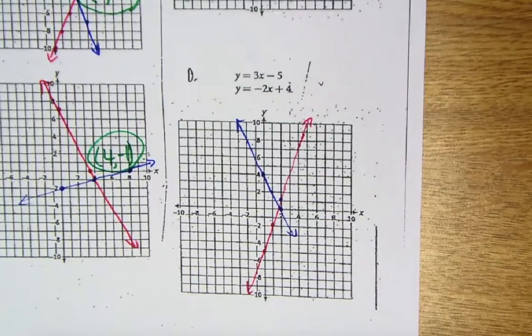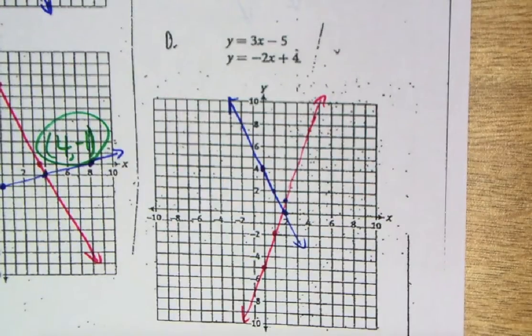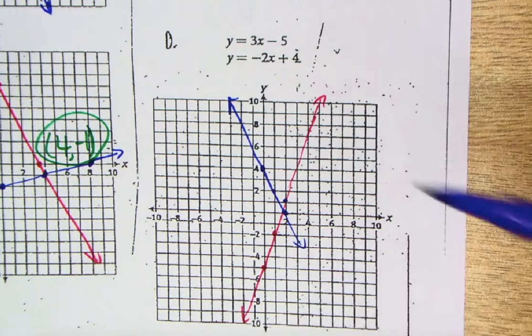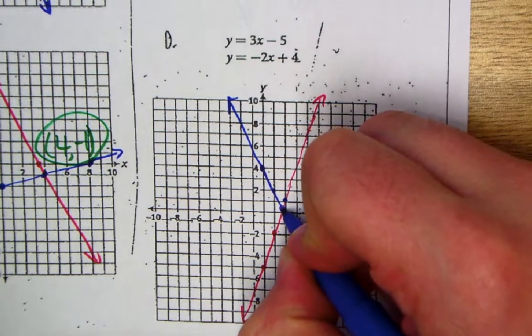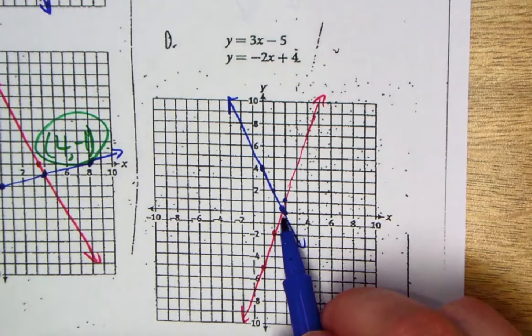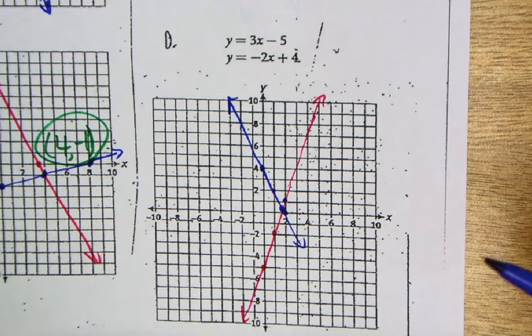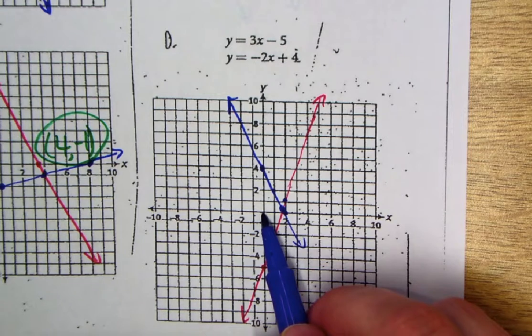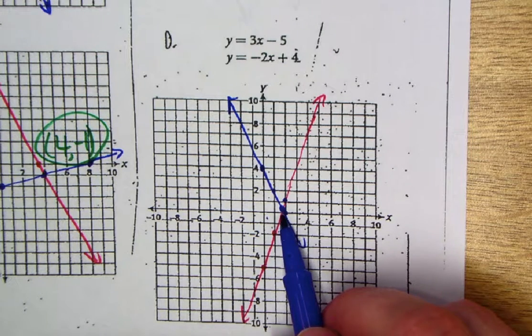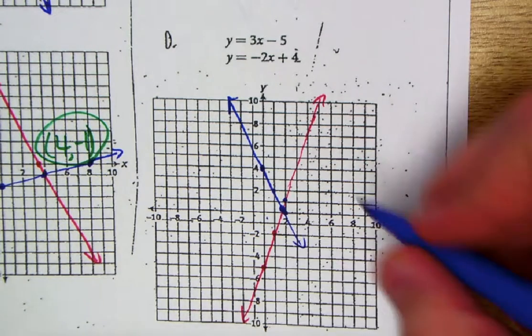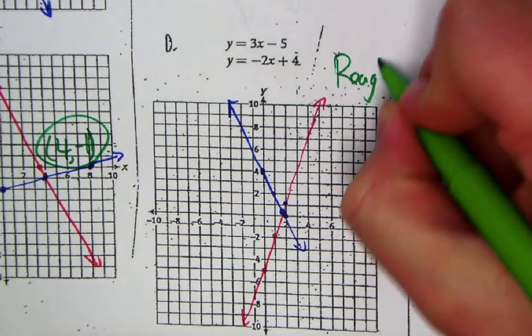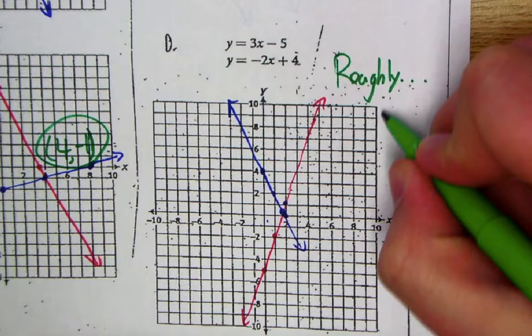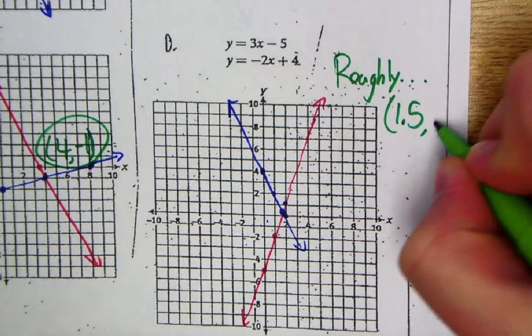And so therefore, this becomes a really good example for why solving systems using graphing is just not the best route to go. This is going to be some fractions. We can estimate it. But again, keep in mind, this is not going to be exact. So in this case, I would say it's maybe like 1 and a half, up a half. So we'll estimate this. Let's even put roughly 1.5, 0.5.